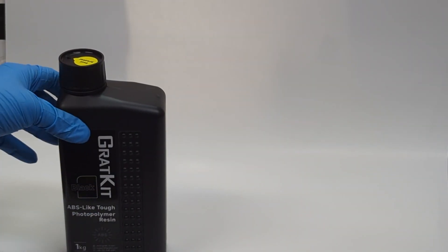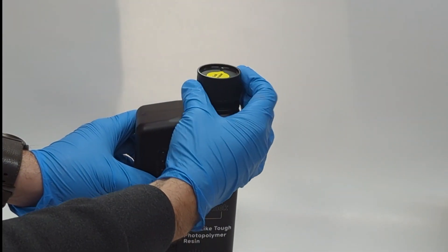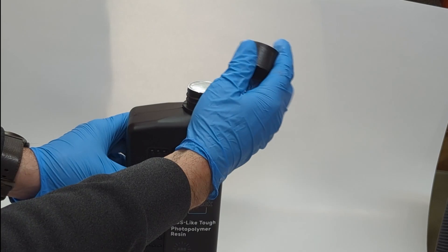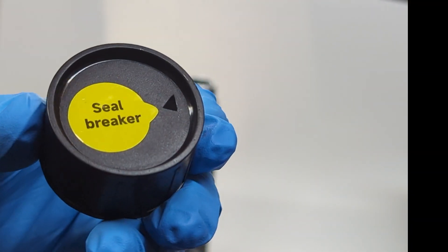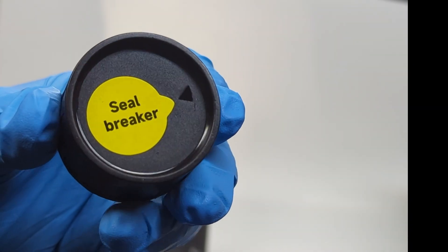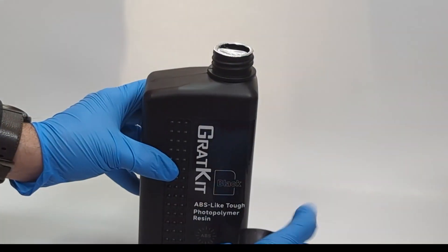For the opening, you can see that Gradkit has thought of everything. A seal breaker has been added to the cap and I was very happy to see this because I don't know if I'm the only one but god I hate opening these bottles with such type of seal, especially when it comes to resin.